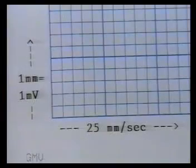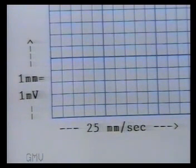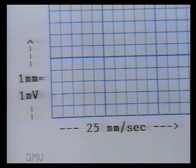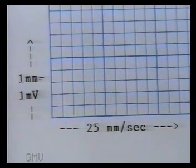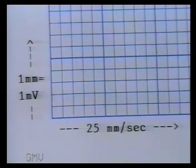The standard ECG paper runs at a rate of 25 mm per second. Each small square represents 0.04 seconds, and each large square represents 0.2 seconds. 1500 small squares represent 1 minute.